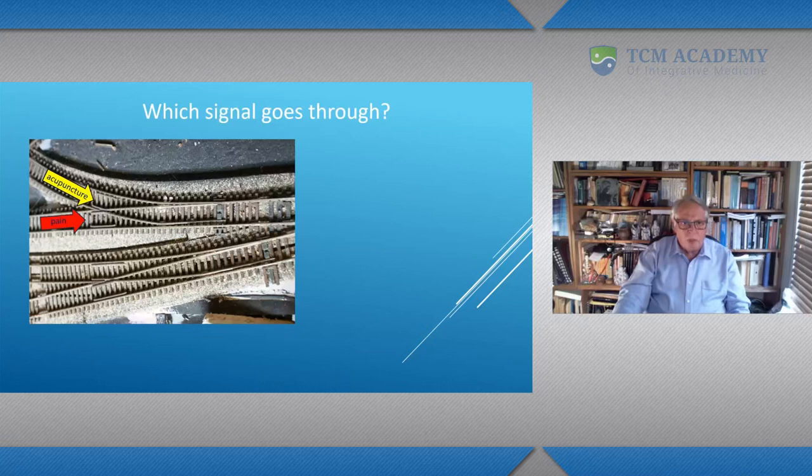The analogy is of a set of points in a railway system. The acupuncture signal is heading towards this junction, the pain signal is heading towards this junction. If the acupuncture signal goes through, the pain sensation is blocked. This is occurring in the dorsal horn of the spine, but what determines which signal goes through?